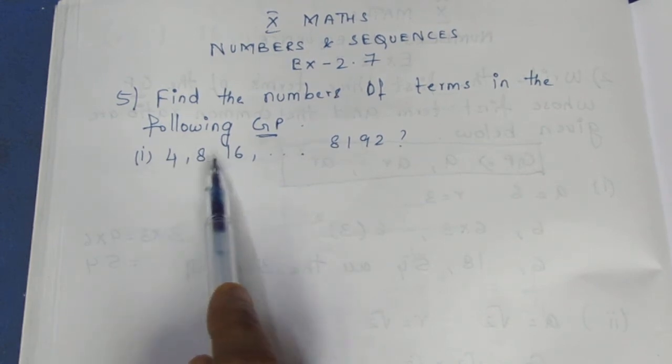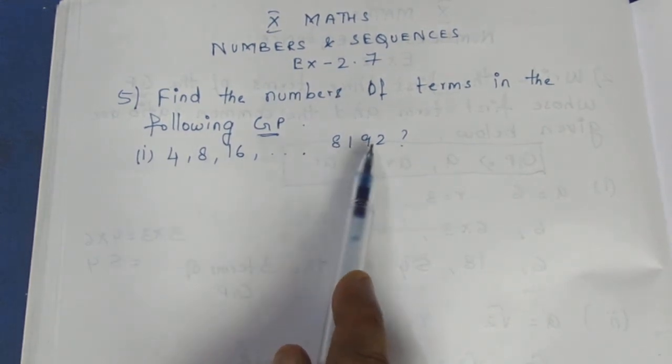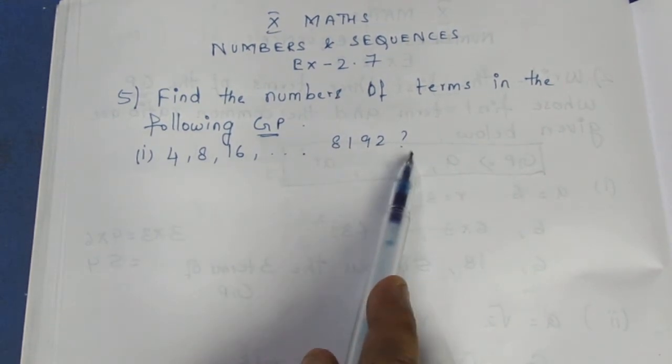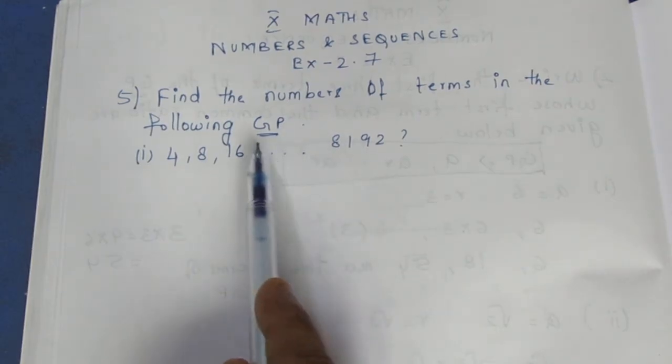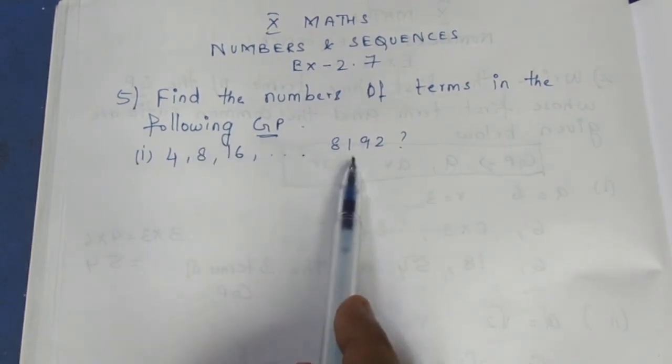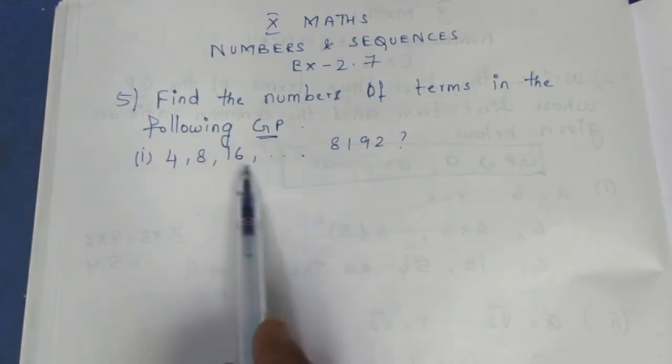The first sequence is 4, 8, 16, up to 8192. Now, we know the last term, and we need to find the number of terms.